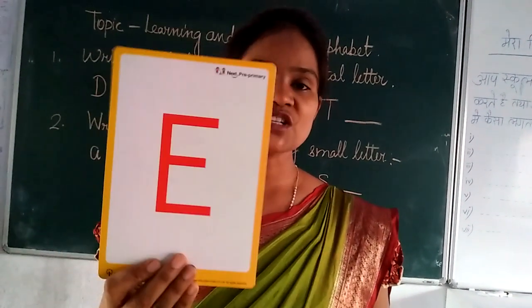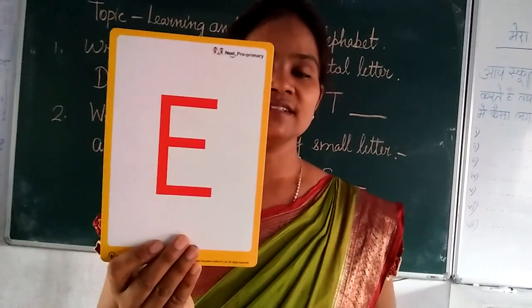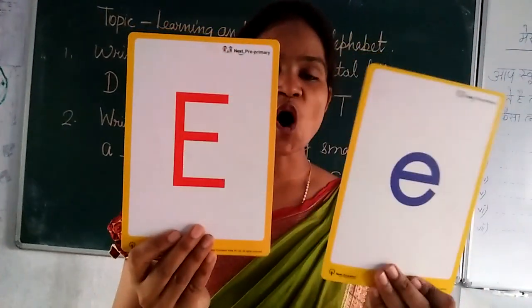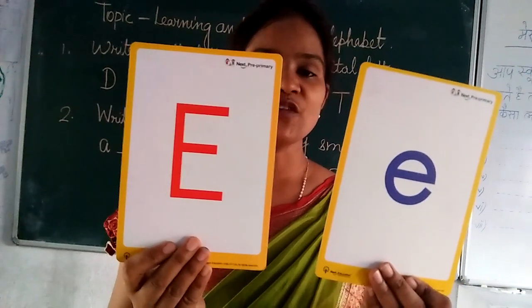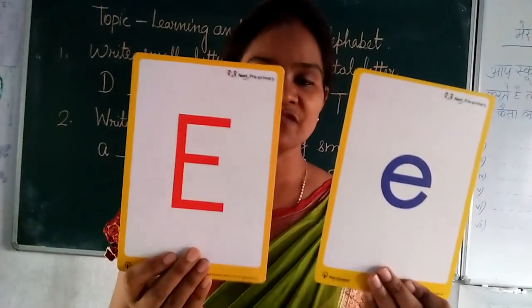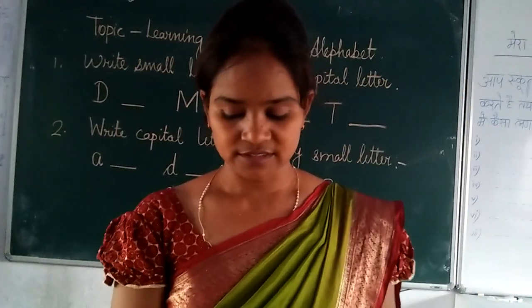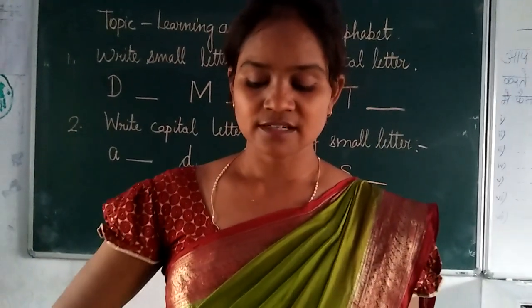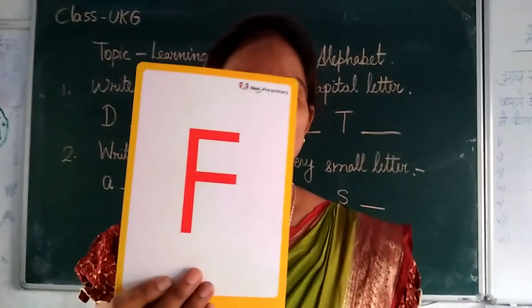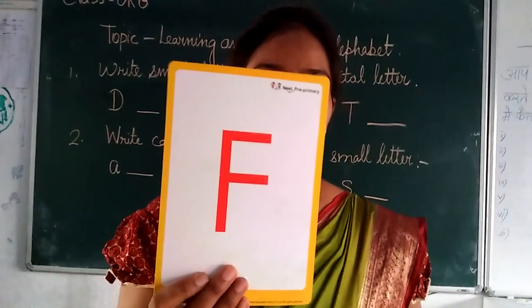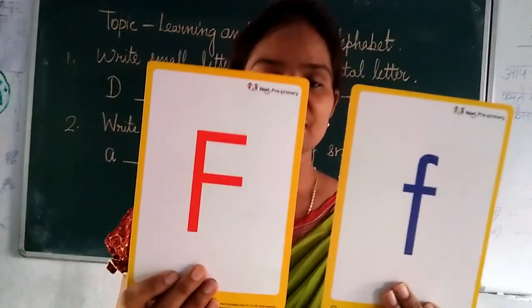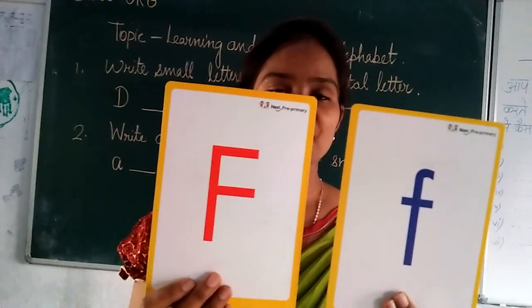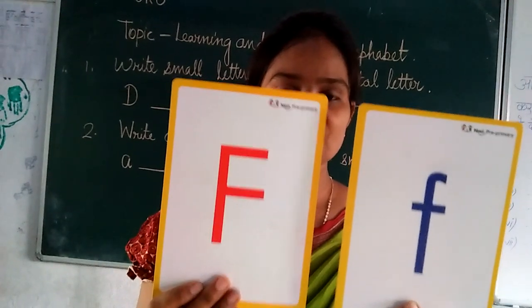Capital E. Small E. E for elephant. Capital F. Small F. F for fish.